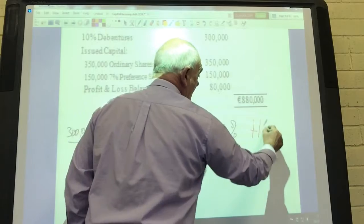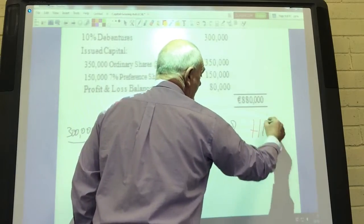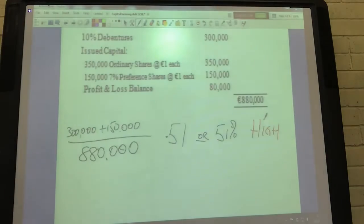As it's over 50 percent this is classified as high capital gearing. It's probably closer to neutral capital gearing but in leaving cert we're inclined to say anything over 50 percent is high gearing and anything under 50 percent is low gearing.